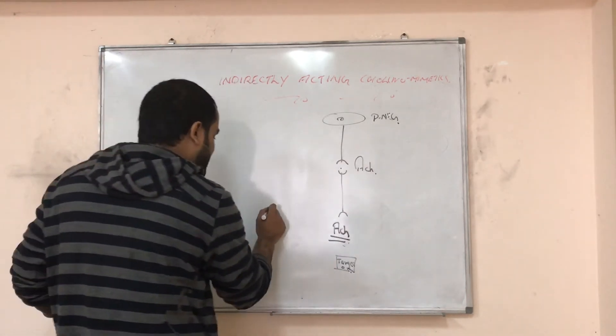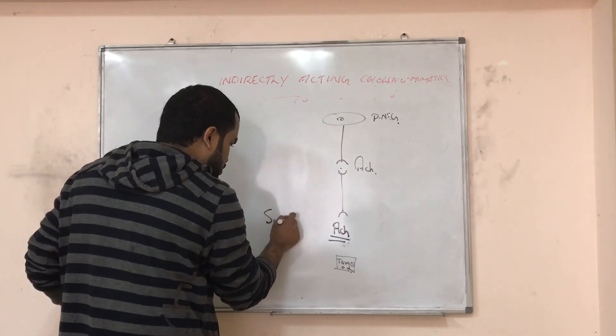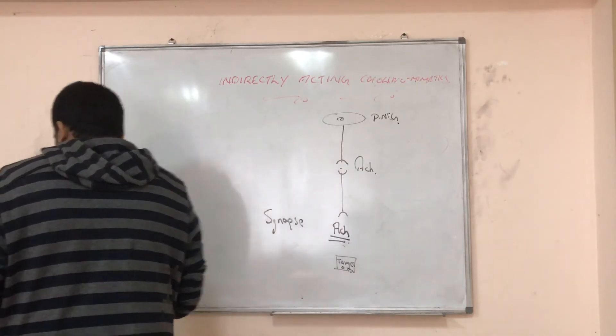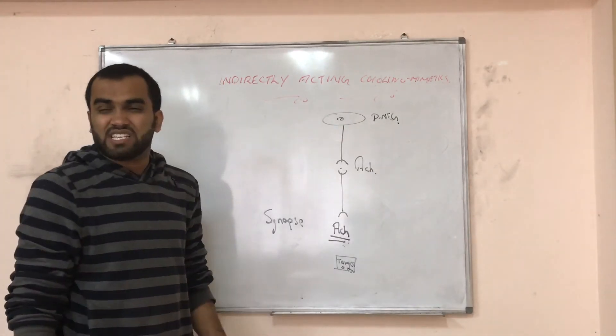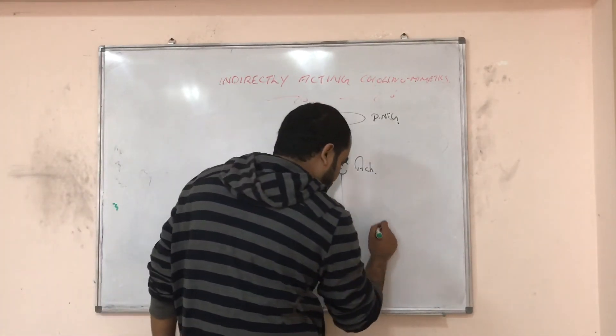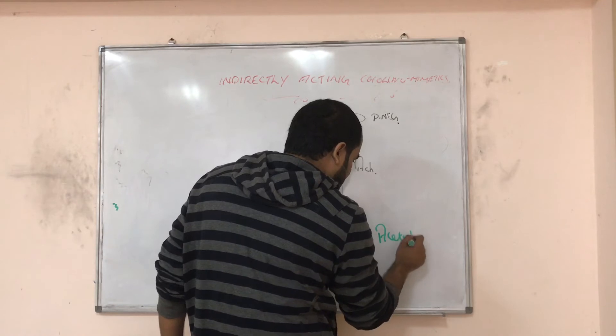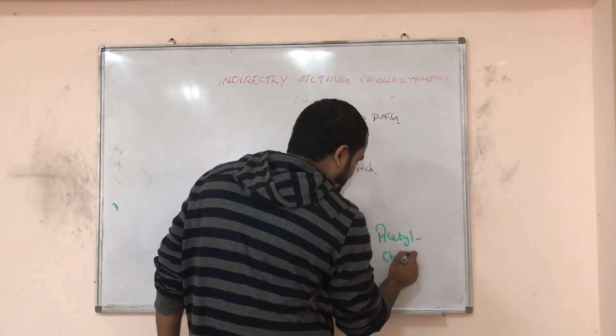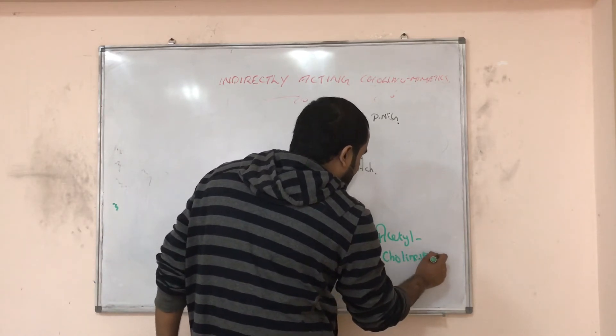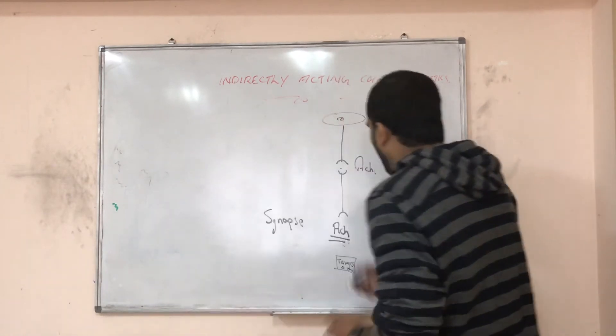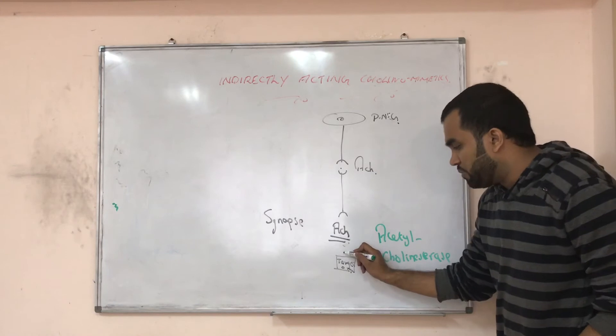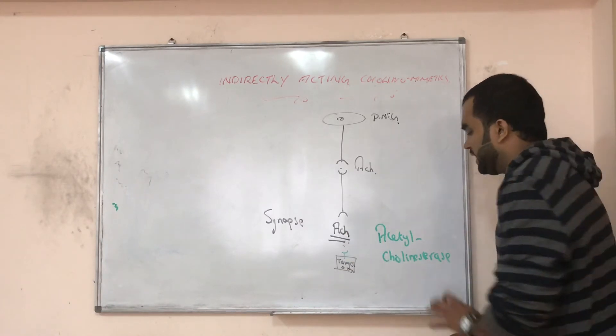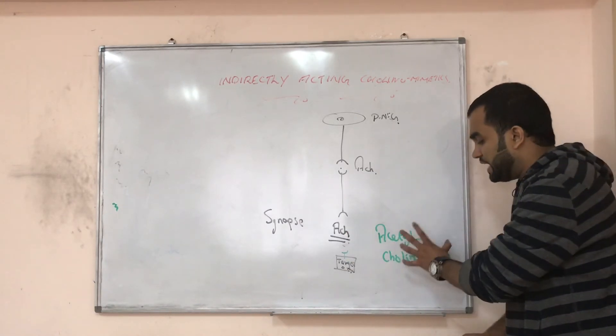But this is called synapse. This center is called synapse. In synapse, we have a particular enzyme. That is called acetylcholinesterase. Normally, imagine there are 100 molecules of acetylcholine coming. So the organ only gets 70. 30 will be eaten up by acetylcholinesterase.